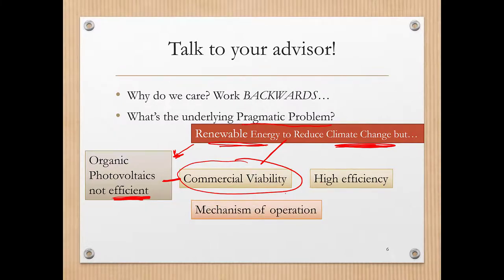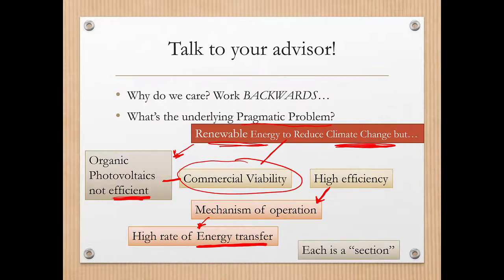If I'm going to understand how to improve the efficiency, I have to understand how organic photovoltaics work, the mechanism of operation. From that mechanism, I might come up with five or six different subsections. At least the one that's most important is what's the connection between energy transfer in these dyes and the mechanism of operation. This is basically a summary working backwards from the hypothesis to this pragmatic problem. This is really the start of the introduction, but I've already identified a bunch of different sections I can put into my introduction.